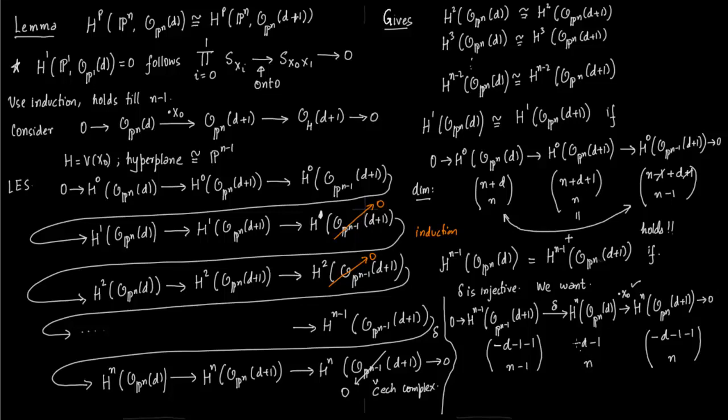So the dimensions add up and by dimension counting, so you take this and this, add them up, it equals this and therefore we have a short exact sequence and we have that this holds.